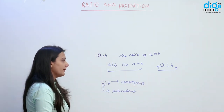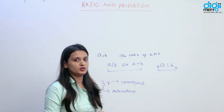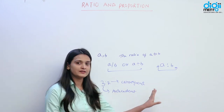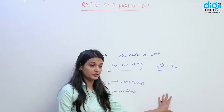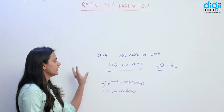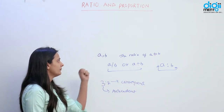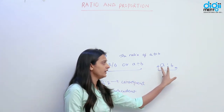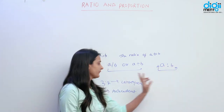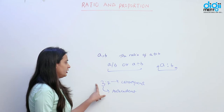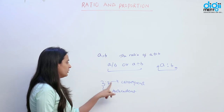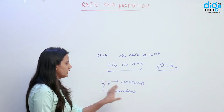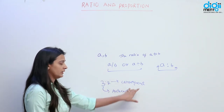Hameara jo ratio hai — ratio kya hai? Ratio jo hai, comparison hai, 2 ya 2 se zyadha similar cheezon ke beech mein. Agar hamare paas 2 number hain A aur B, to ratio ko kaisa denote karte hain? A ratio B. Ab jo first term hoti hai ratio ke andar usko bolte hain antecedent, aur jo second term hoti hai usko bolte hain consequent.